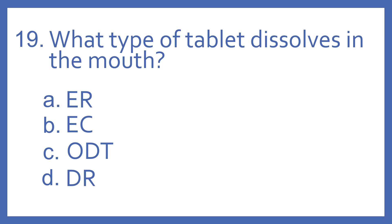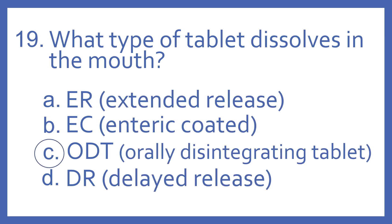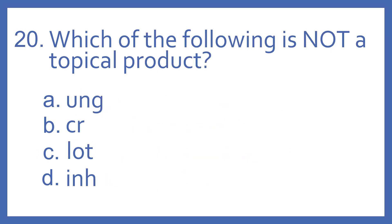Number 19, what type of tablet dissolves in the mouth? A, ER. B, EC. C, ODT. Or D, DR. And the answer is C, ODT. That stands for orally disintegrating tablet. So that is a tablet that dissolves in the mouth. ER stands for extended release. So this would mean the release of the medication is slowly over a period of time. EC means enteric coated. This means that the tablet has a special coating on it so that it is not broken down quickly by the stomach acid. And it passes on through so that there's no irritation to the stomach lining. And DR means delayed release. This means that the tablet's release is delayed.